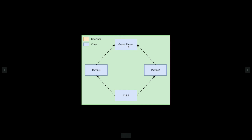For example, say this grandparent has a method called draw. When parent1 and parent2 inherit from grandparent, parent1 will have the same method draw and parent2 also will have the same method, because it can access the draw method of grandparent. Parent1 actually overrides the draw method, while parent2 doesn't do anything — it gets the draw method from its parent.